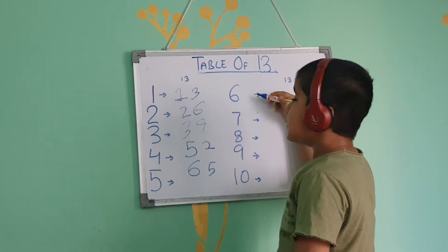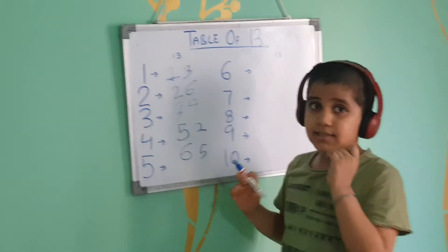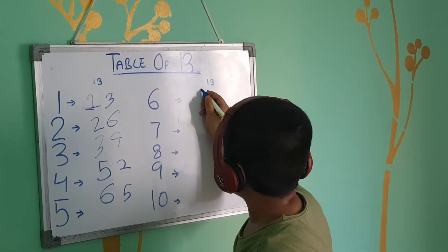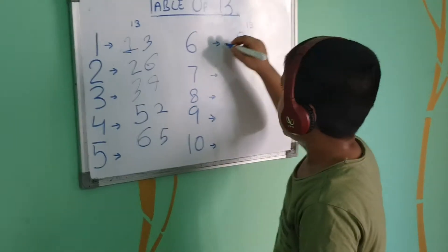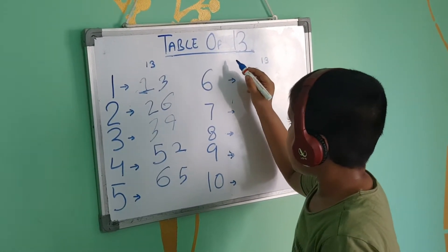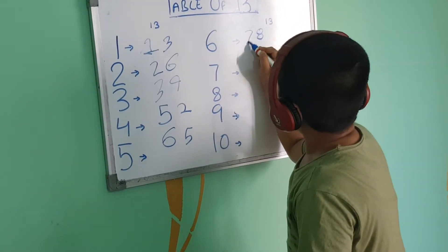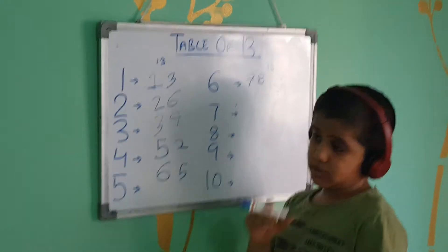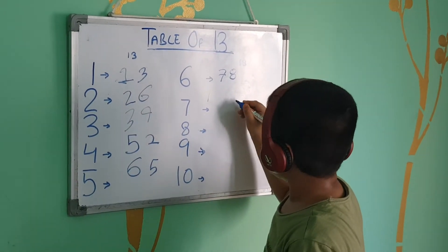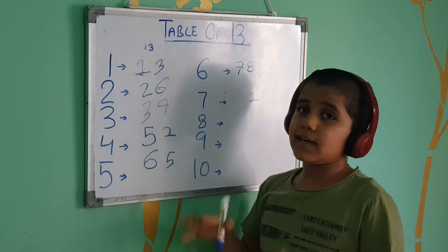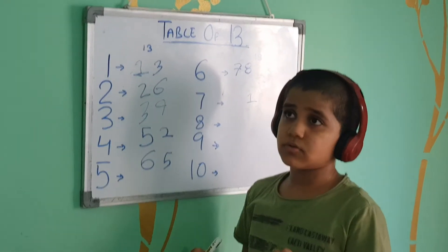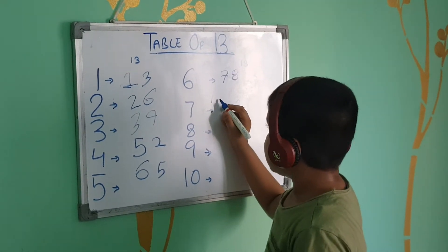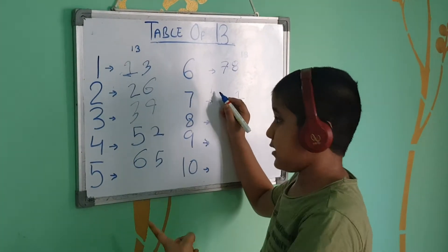Now we will do 3 sixes. 3 sixes is 18, so we will write 8 here and take 1 carry, making it 7. So we will write here 3 sevens, which is 21. 7 plus 2 is equal to 9, so we write 89 — giving us 91.